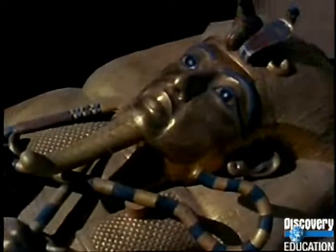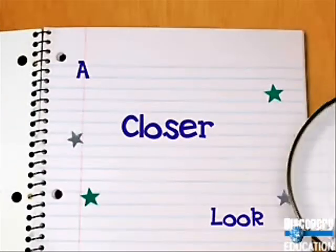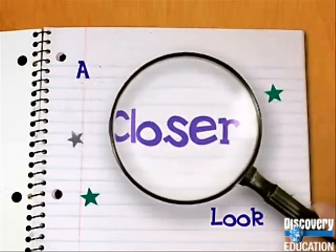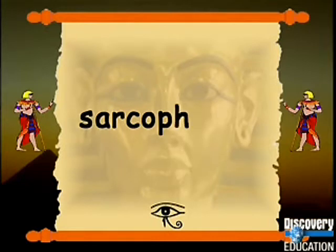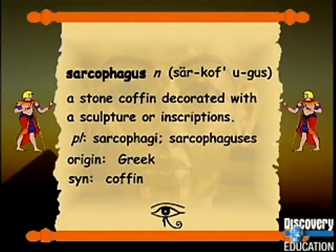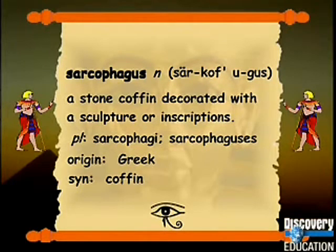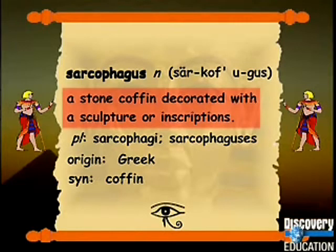Now that we have learned about mummies in ancient Egypt, let's take a closer look at the unfamiliar words that were heard and look them up in the dictionary. The report said that the mummy of Tutankhamen was found in a golden sarcophagus (S-A-R-C-O-P-H-A-G-U-S). First, let's find out how to pronounce that word — it's pronounced sarcophagus. Now let's find out what sarcophagus means. A sarcophagus is a stone coffin decorated with a sculpture or inscriptions. That means that the mummy of Tutankhamen was found in a coffin.